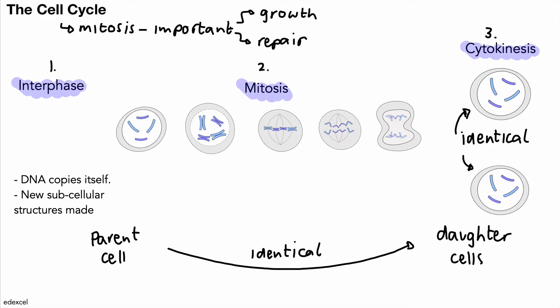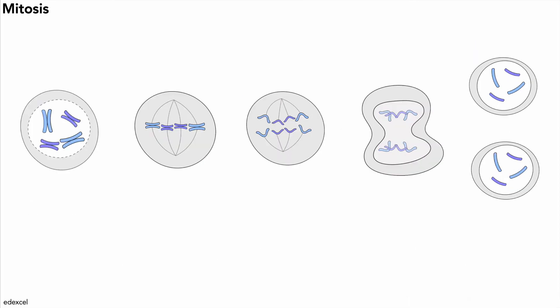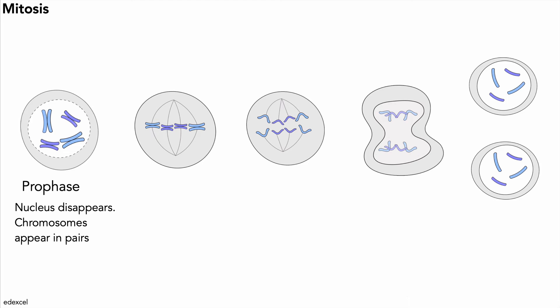Let's take a look at mitosis in the detail we need to know. These are enlarged diagrams. The first stage of mitosis is called the prophase. In the prophase, the nuclear membrane disappears and the chromosomes appear in pairs in the cell. We also have the formation of spindle fibers, which begin to form as well.